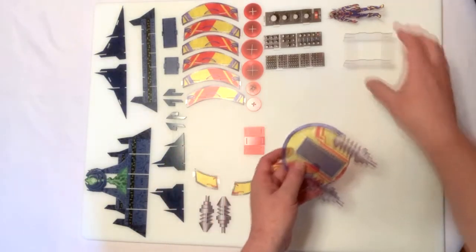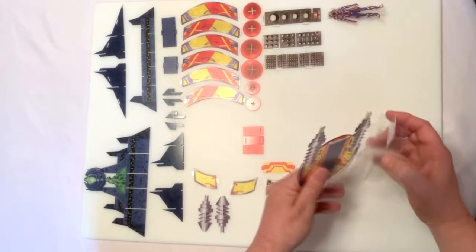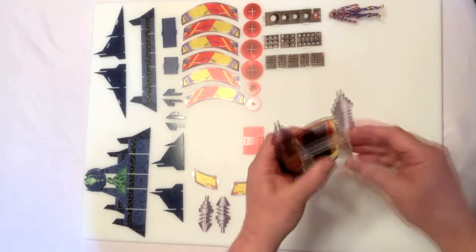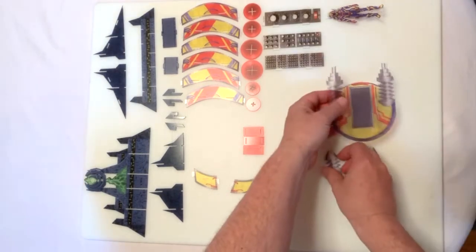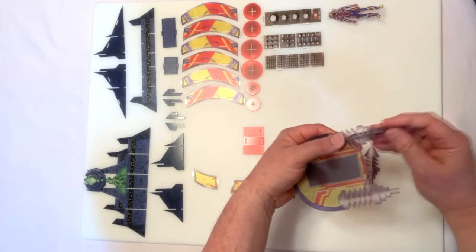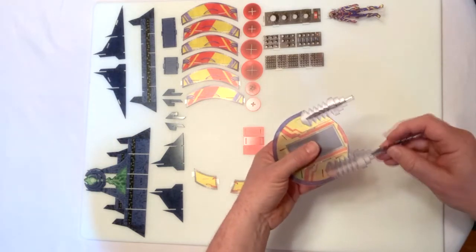Step three, take the sonic lathe platform and place it on the base from step two. Step four, slide the two sonic cannon pieces onto the cannons on the platform.